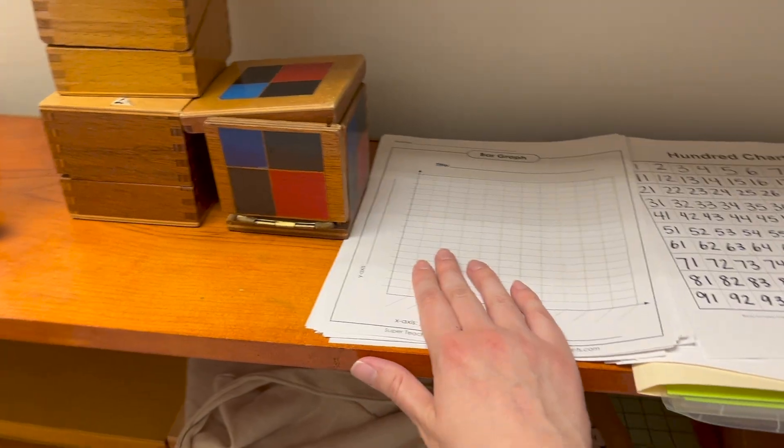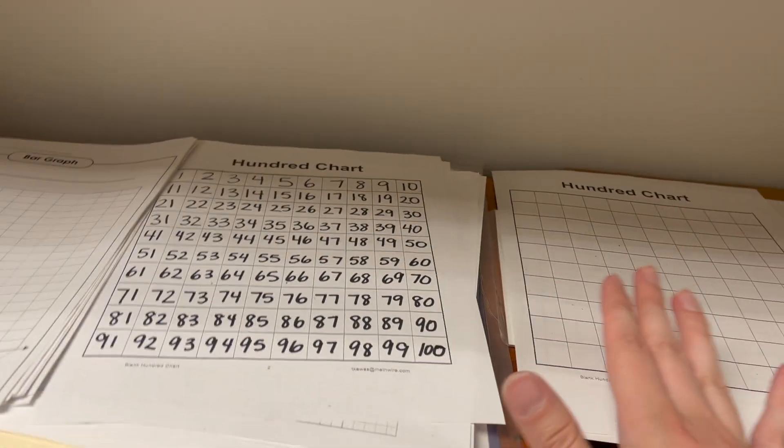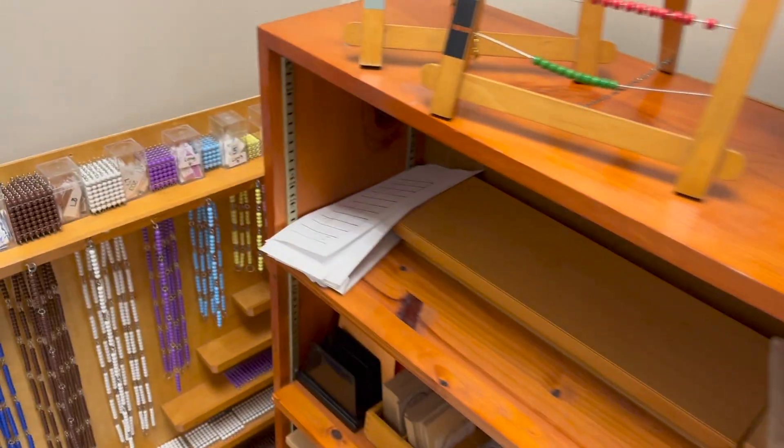So we have those laid out. And then I have bar graph work, hundred chart, hundred chart, the dot game, and then the decanomial paper on the top. But I'll go in order now.